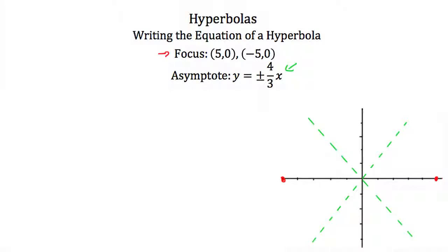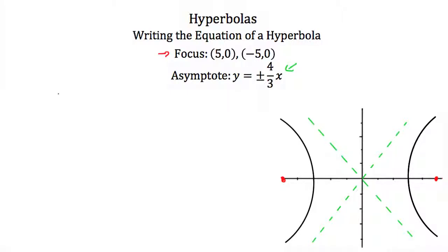Since the foci are on the x-axis, our hyperbola is going to open in the positive and negative x directions. That means it's the y squared term that's being subtracted. So our standard form is going to look like x squared over a squared minus y squared over b squared equals one.